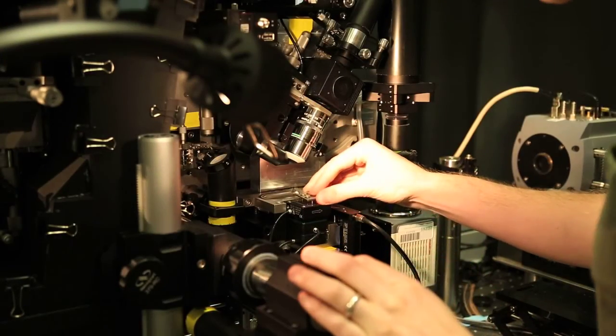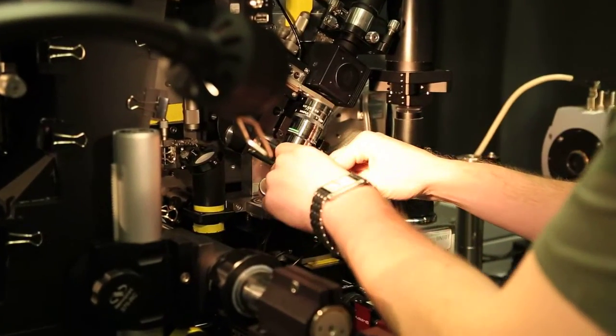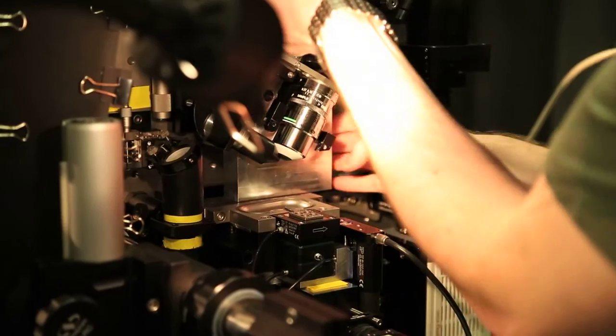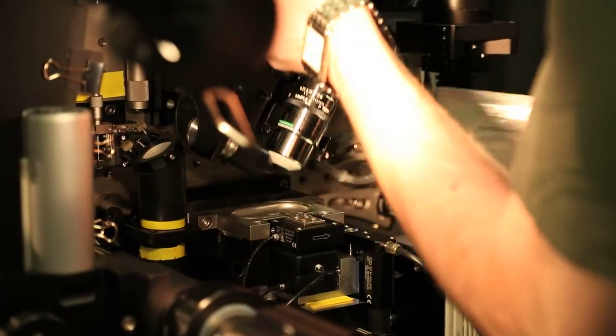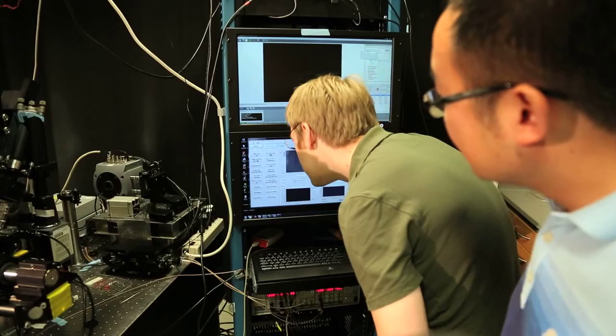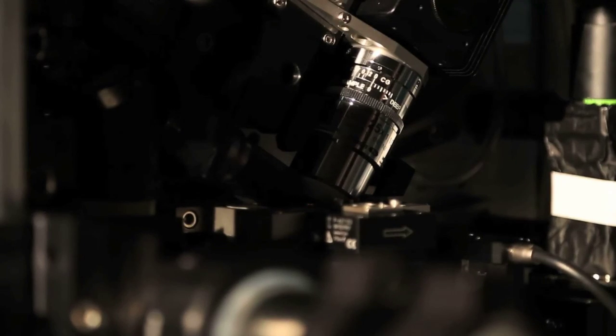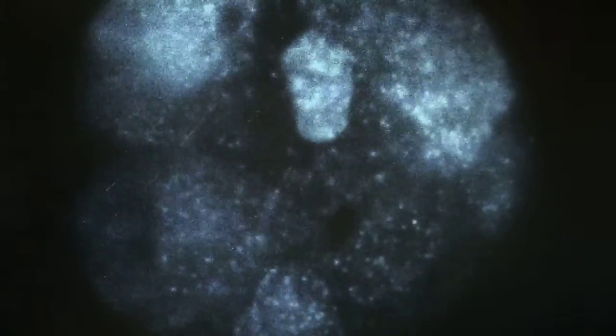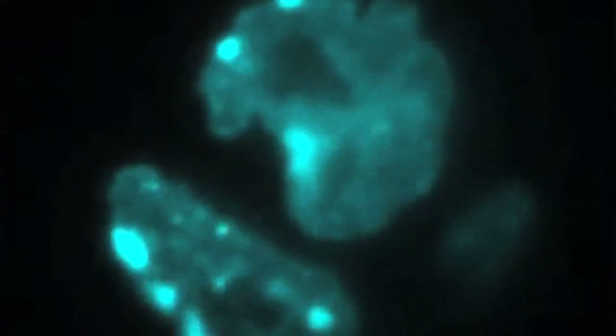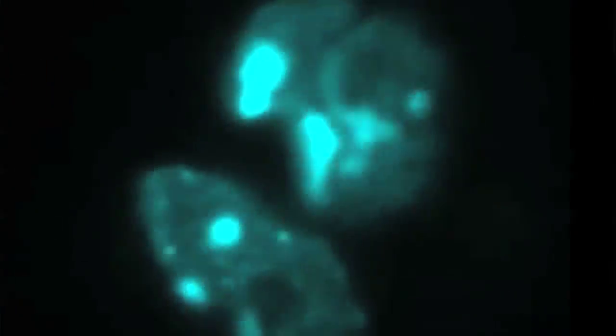The microscope we're using right now is called a lattice light sheet microscope. It's completely new, built from scratch. One very special property is that you can illuminate a very thin sheet inside a living cell with very fine resolution, like 300 nanometers, which normally couldn't be achieved by other light sheet techniques.